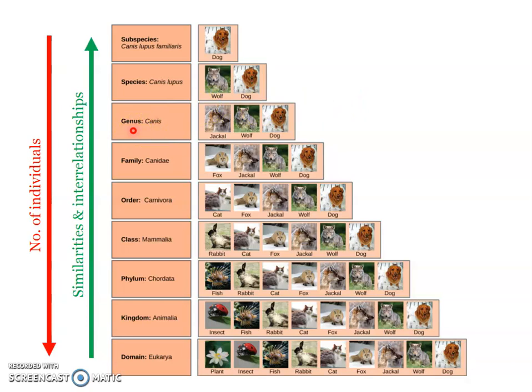Above the species level, each category contains groups of lower categories. Panthera is a genus above the species level and it contains several groups of lower categories — that is different species. So Panthera is a genus which includes Panthera leo, Panthera tigris, and Panthera leopardus — these three are the lower categories under the genus Panthera.